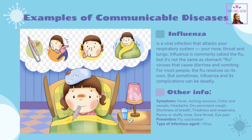Influenza is a viral infection that attacks your respiratory system — your nose, throat, and lungs. Influenza is commonly called the flu, but it's not the same as stomach flu viruses that cause diarrhea and vomiting. For most people, the flu resolves on its own, but sometimes influenza and its complications can be deadly. Symptoms include fever, aching muscles, chills and sweats, headache, dry persistent cough, shortness of breath, tiredness and weakness, runny or stuffy nose, sore throat, and eye pain. Prevention: flu vaccination. Type of infectious agent: Virus.